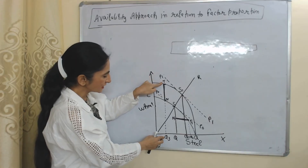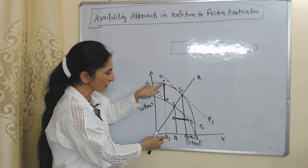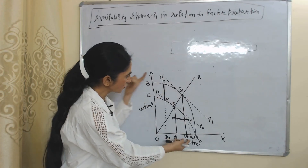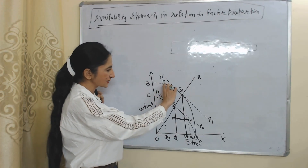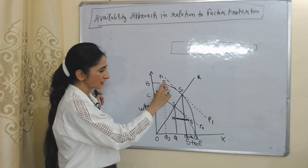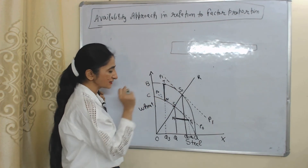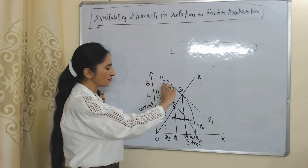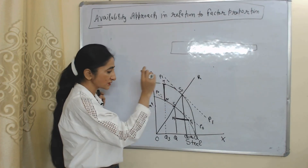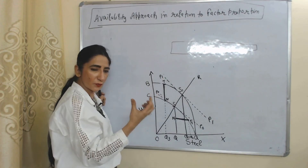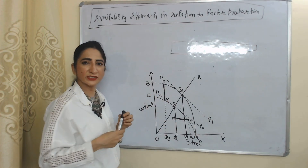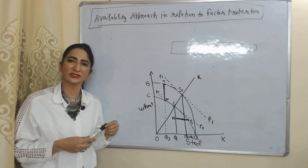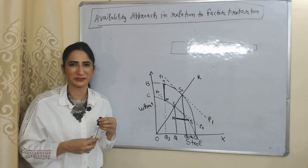Similarly, the production point of country B is T. According to this production point, country B is producing TQ3 of wheat, but country B actually needs S1Q1 of wheat. So country B has a TN excess amount of wheat. That's why country B will export TN amount of wheat to country C. This is all about Kravis Availability Theory of International Trade. Thank you so much for watching this video. Bye, take care.